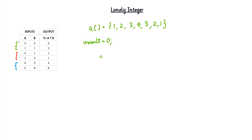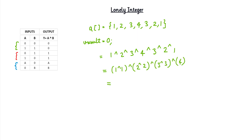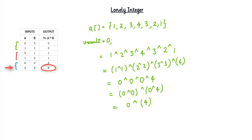Let's understand this with the HackerRank example. We take the input array and do XOR of all the elements using our result variable. Since both inputs of each duplicate pair are the same, each pair will XOR to zero. Ultimately we are left with zero XOR four, and from the table we know that result will be four. So we get four, which is our answer.